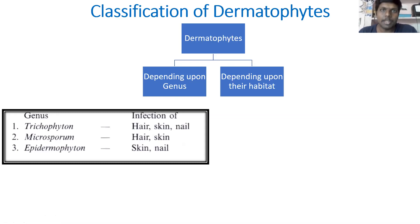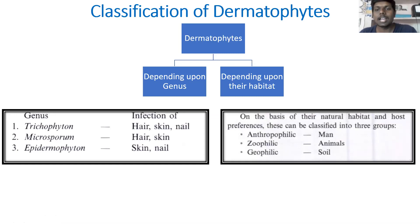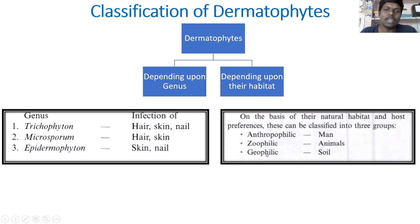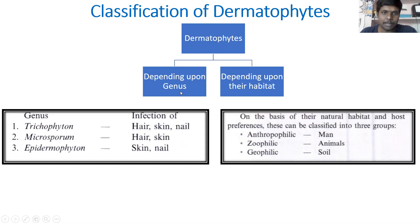Depending upon their habitat — where they naturally live — dermatophytes are of three types: anthropophilic, zoophilic, and geophilic. Anthropophilic means these fungi infect humans. Zoophilic means they cause infection in animals. Geophilic means they are present in the soil. So these are the three habitat-based types, and depending upon genus we have Trichophyton, Microsporum, and Epidermophyton species.